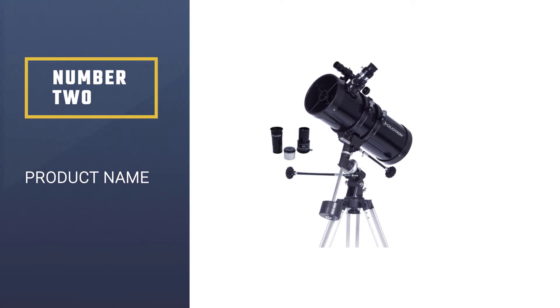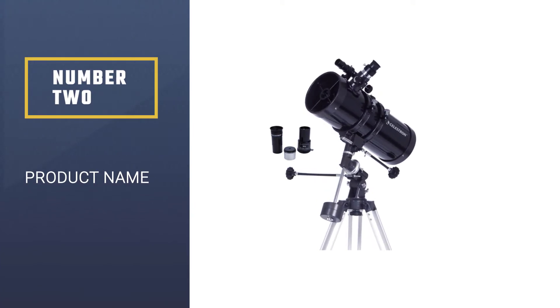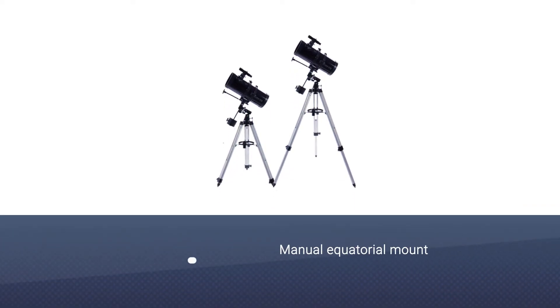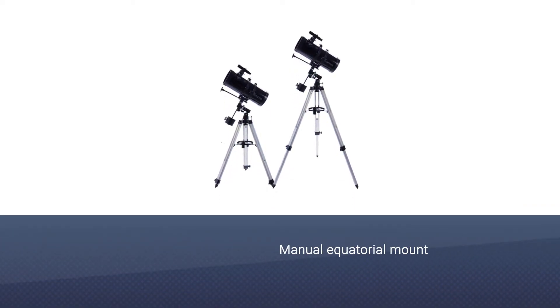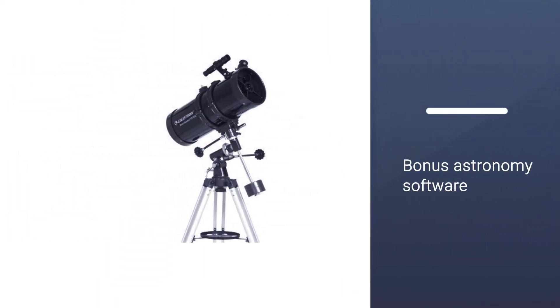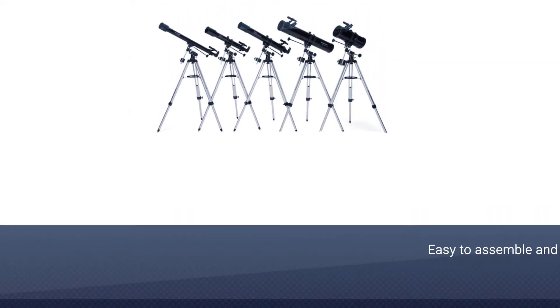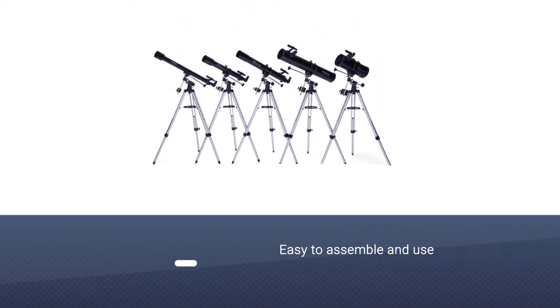Number two: Celestron PowerSeeker 127 EQ Telescope. The telescope offers the best features to its users and has become one of the famous travel friendly telescopes in the market. It is easy to assemble and use. You do not need any high-end tools to assemble the telescope. It is an exceptional combination of quality, power and value.